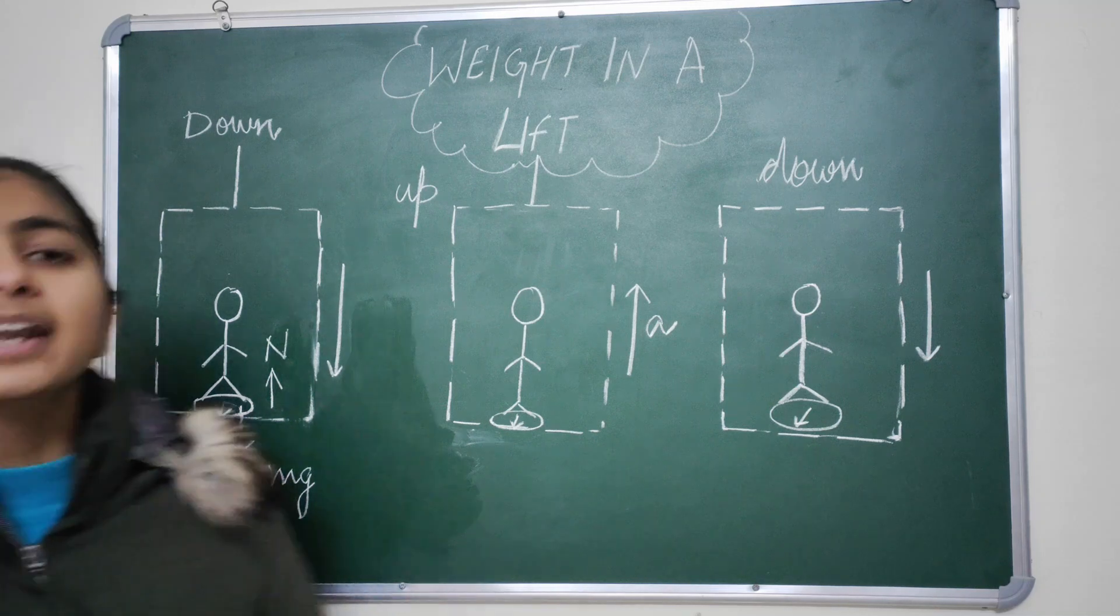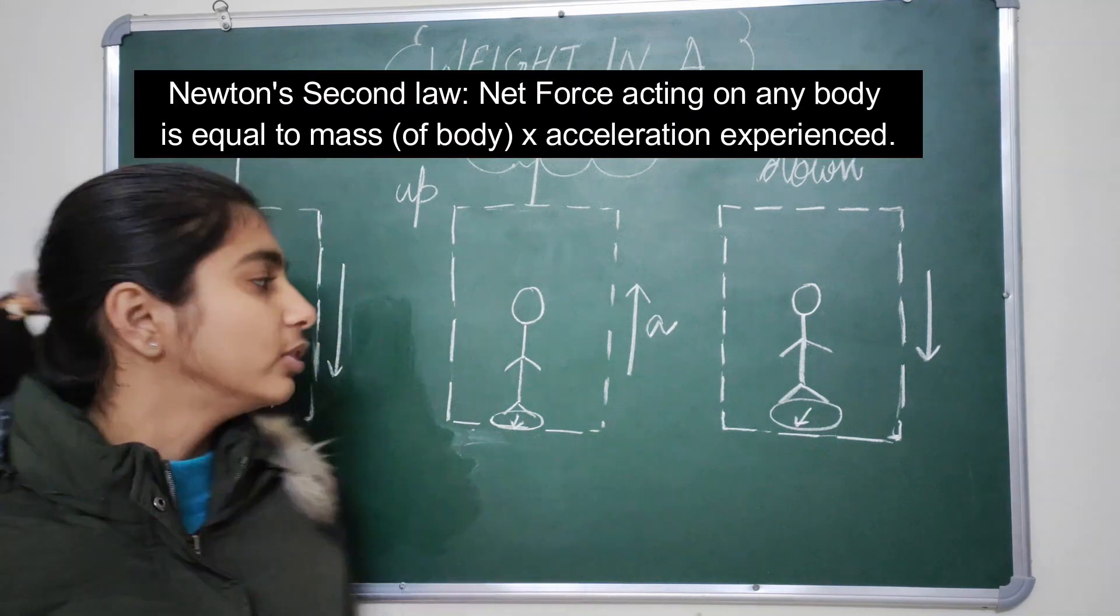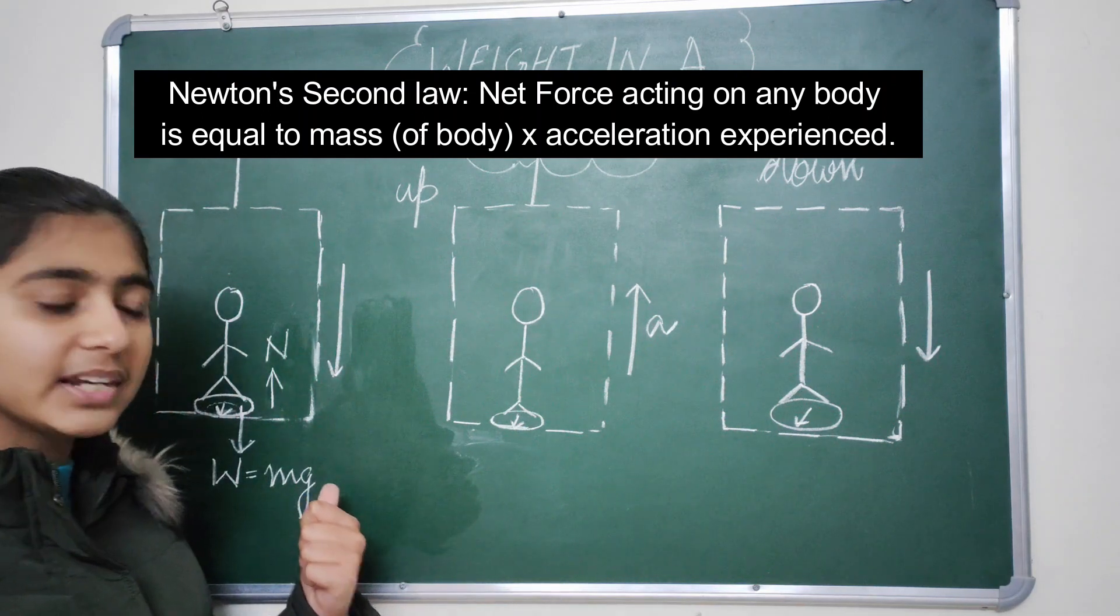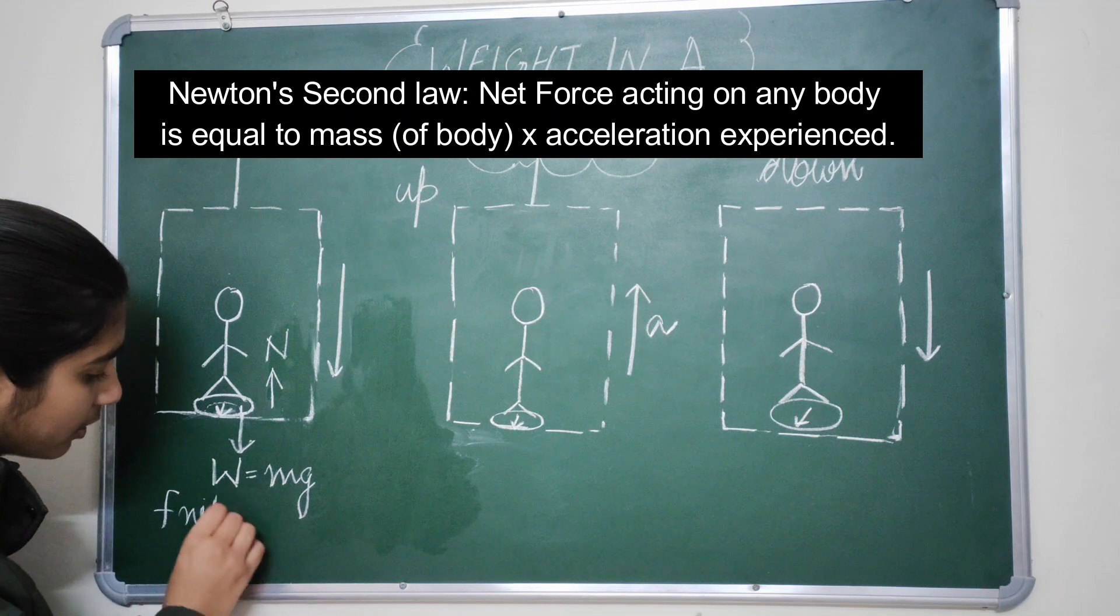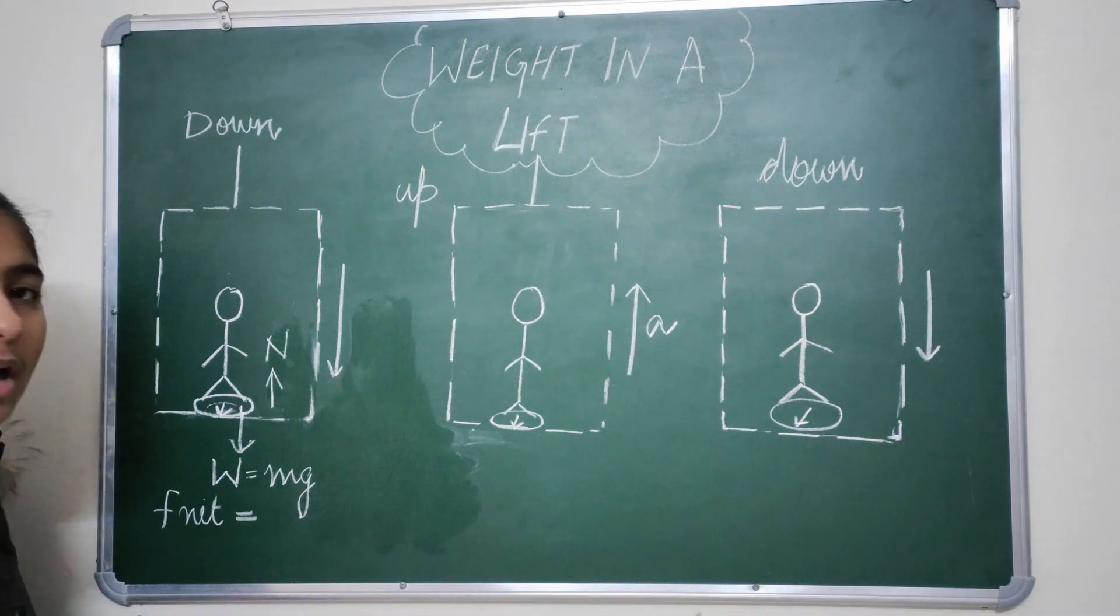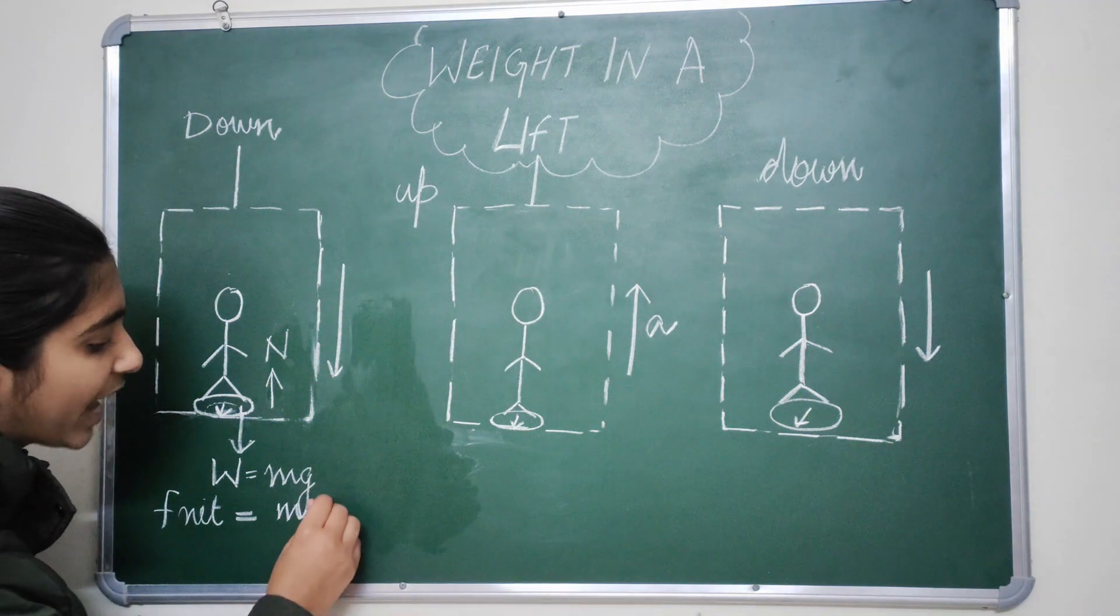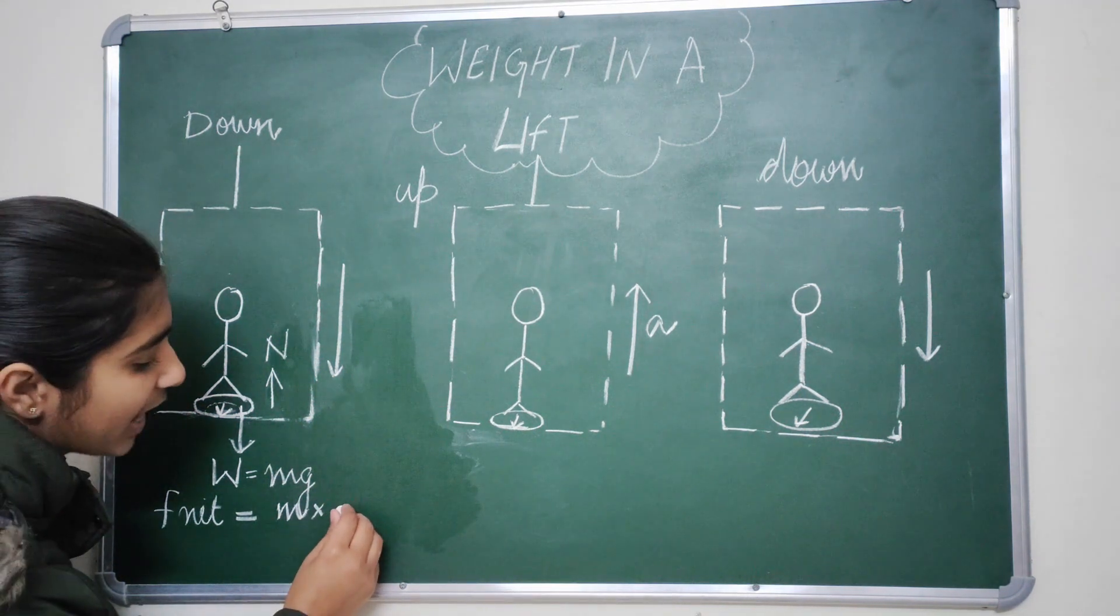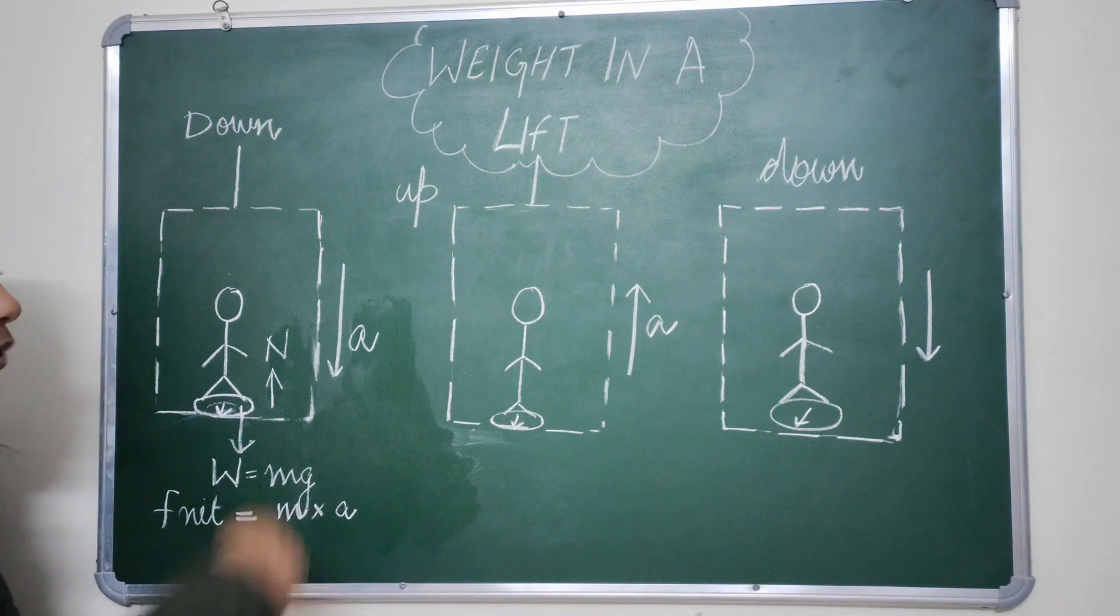So by the second law of Newton, if we try to find out the net force acting on this body, that can be written as F net equals the mass of this body into the acceleration experienced by it, that is small a, as the lift is going downwards.